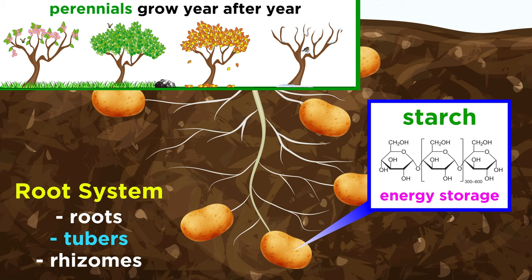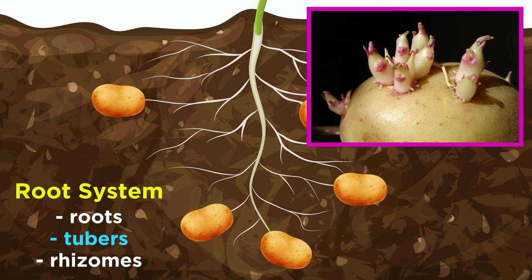Starch storage in tubers is important for plants that grow year after year, called perennials, because the energy in the starch allows the plant to grow before its leaves and photosynthetic abilities are functional at the beginning of the growing season. This explains why if you've ever left a potato on your counter for too long, it will actually start growing buds and shoots of its own.